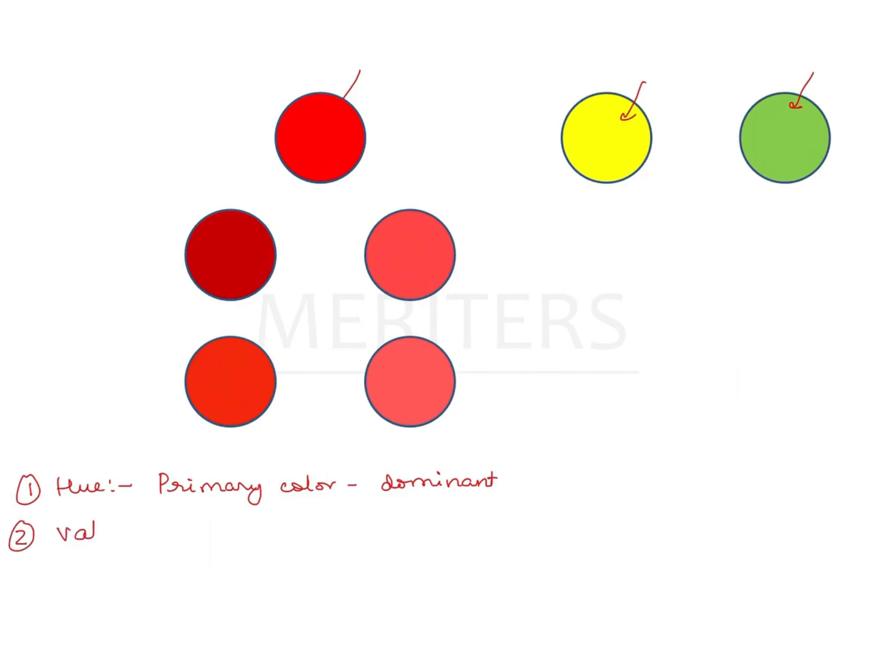The second is value. Value is nothing but degree of lightness or darkness. If you compare these two colors, the first one is darker as compared to the second one. So number one has less value compared to number two. The lighter the color, the higher is the value.